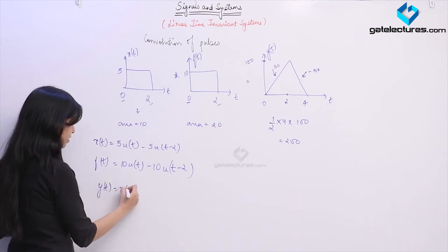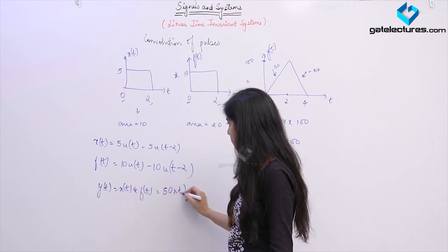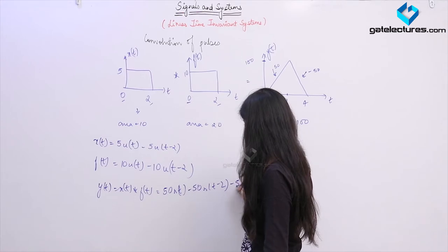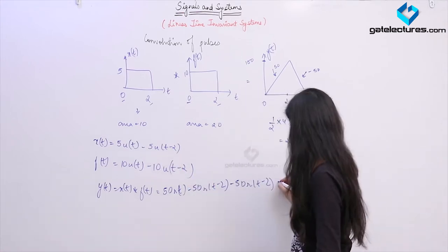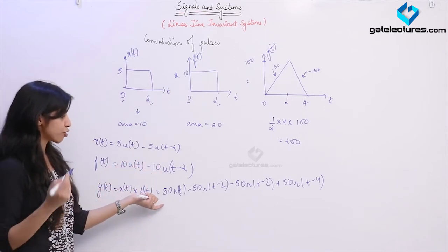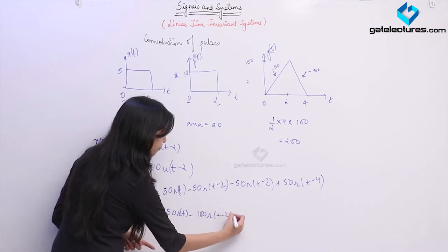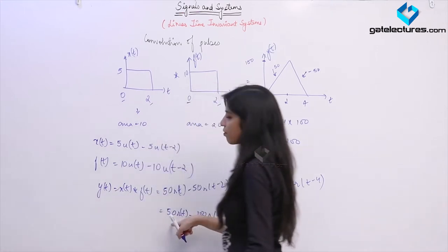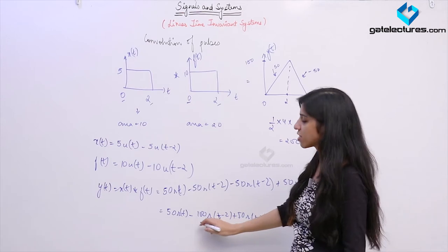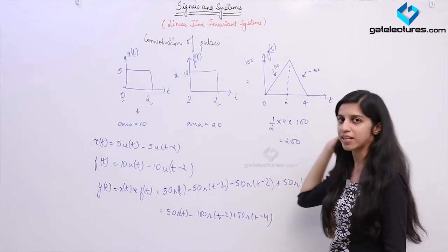So y(t) = x(t) * f(t). Performing convolution term by term, we get: 50r(t) − 50r(t−2) − 50r(t−2) + 50r(t−4). Simplifying: 50r(t) − 100r(t−2) + 50r(t−4). This means a line of slope 50 starting from t = 0 up to t = 2; at t = 2 the slope changes by −100, giving a resulting slope of −50 continuing till t = 4; and at t = 4 a slope change of +50 makes the final slope 0.